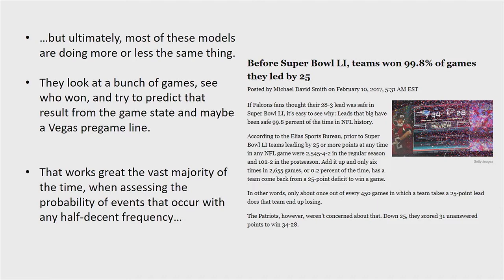That method is so prevalent because it works really well. When you have events that occur with any half-decent frequency — say, 1 in 20 or 1 in 30 times — that's going to be pretty reliable. And in fact, teams that led by as much as the Falcons did historically had gone on to win 99.8% of the time.